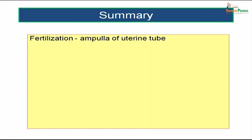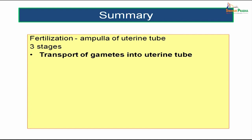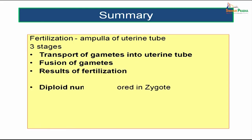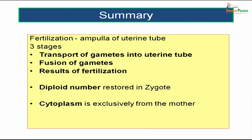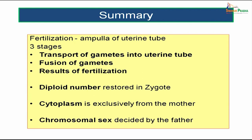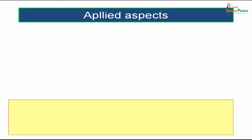Fertilization happens at the ampulla of the uterine tube and occurs in three stages: transport of gametes, fusion of gametes (spermatozoa from father and oocyte from mother), and the results of fertilization. The main aim of fertilization is to restore the diploid number in the zygote through haploid contributions from both father and mother. The chromosomal sex is determined by the father.